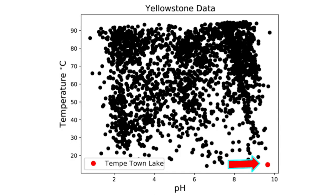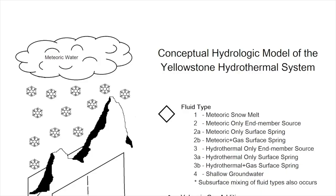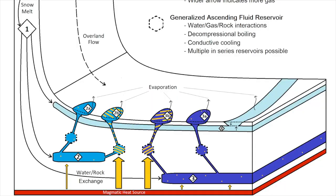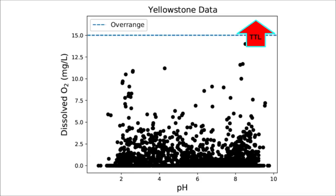When we consider oxygen, we need to think about where the water in a hot spring has been. A prominent hypothesis is that Yellowstone hot spring water starts as snow in the mountains north of the park, then percolates into the ground, gets heated by the Yellowstone volcano, reacts with rock, and returns to the surface over thousands of years. This means that water flowing out of a spring hasn't seen atmospheric oxygen in a long time, so we would expect to see much lower dissolved oxygen in fresh hot spring water compared to Tempe Town Lake.